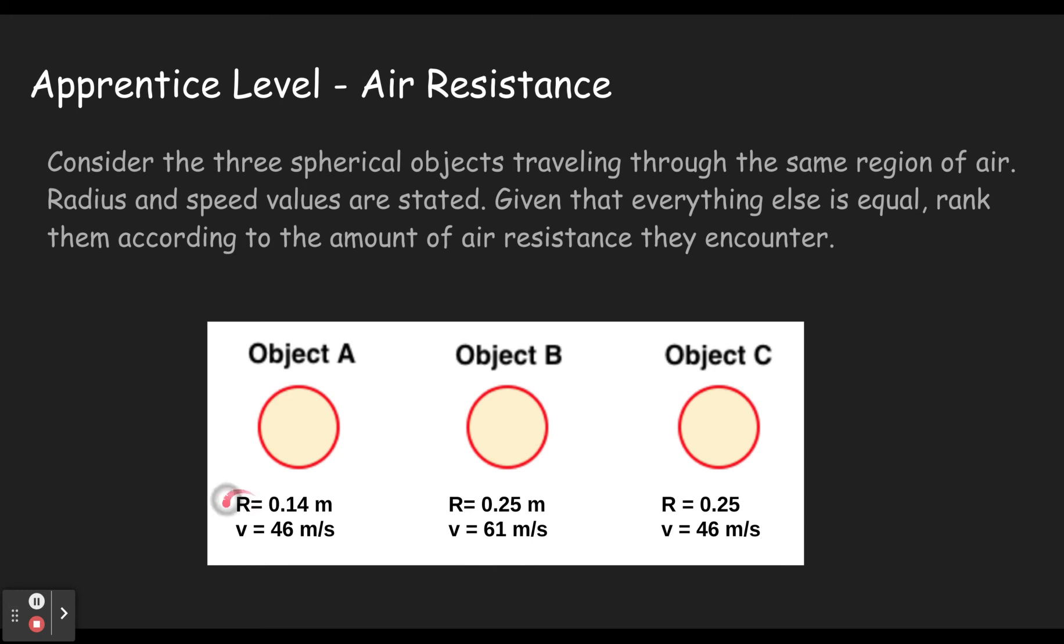Remember, radius, which would affect the surface area, the bigger the surface area, the bigger the air resistance and for speed or velocity, the bigger the speed, the bigger the air resistance. So this one has the biggest surface area and the biggest velocity. So that's going to be the greatest amount of air resistance.